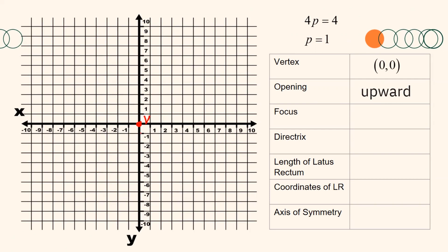Locating the focus, remember that it is in the interior of the parabola. Since our parabola opens upward, our focus is somewhere above our vertex. Since p equals 1 and our focus is 1 unit away from the vertex, our focus is at coordinates 0, 1. The directrix is a line outside the parabola and 1 unit away from the vertex, so the directrix is y equals negative 1.